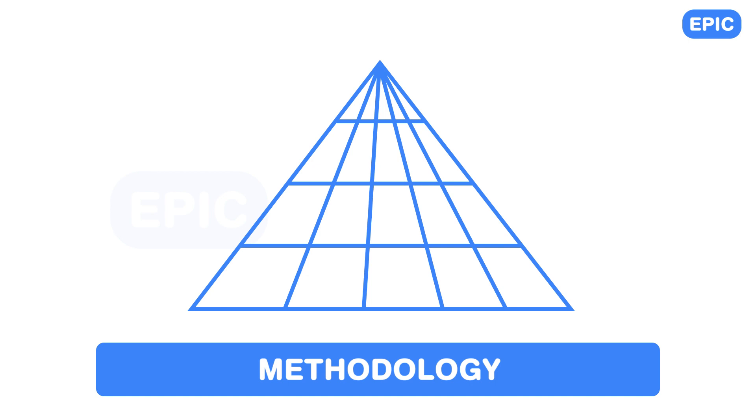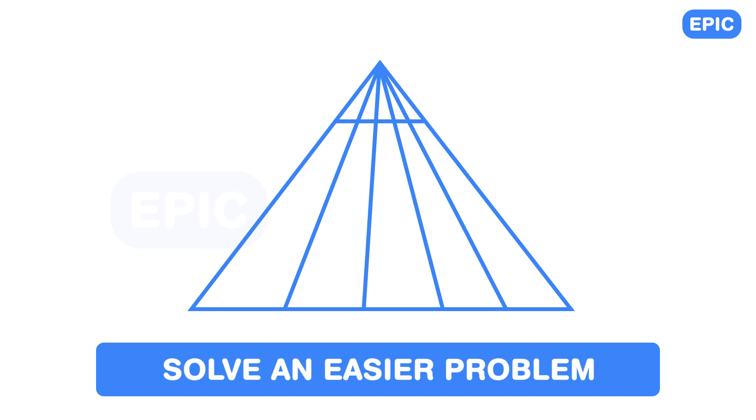One of the most important methods to solve a problem that you cannot solve is to solve an easier problem. So we remove all the horizontal lines and make the problem easier. If you know how to solve it now, that's great.